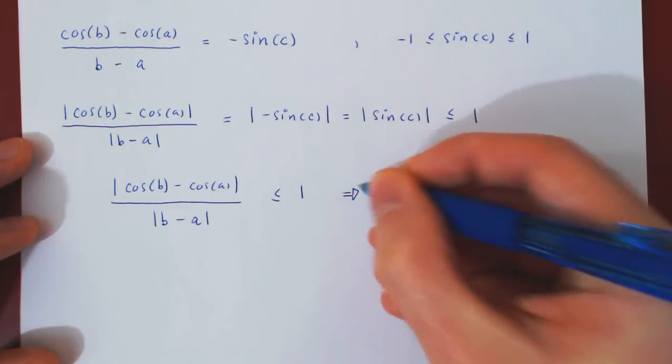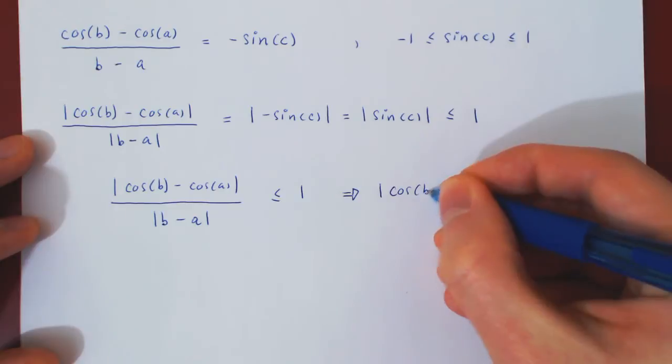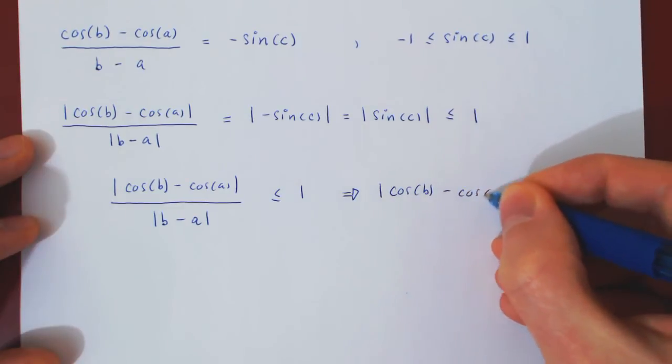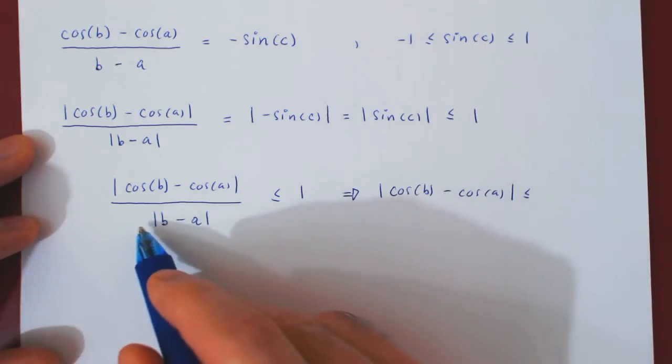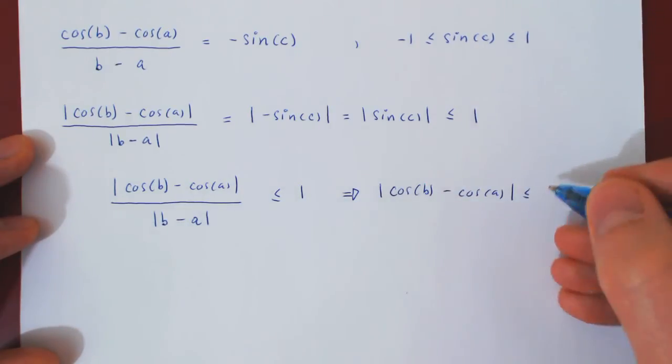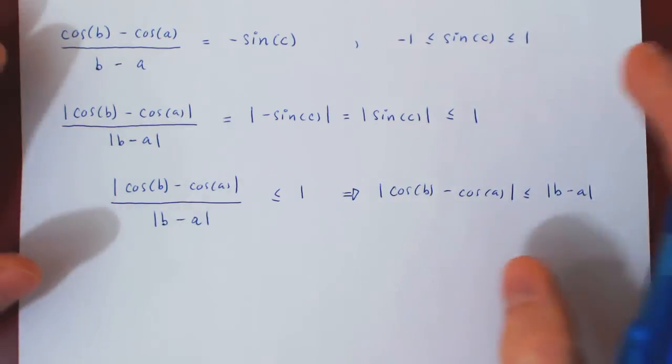And if we do, well, on the left we'll be left with the absolute value of cos(b) minus cos(a) is at most one times the absolute value of b minus a, which of course is simply the absolute value of b minus a, which is what we hoped to prove.